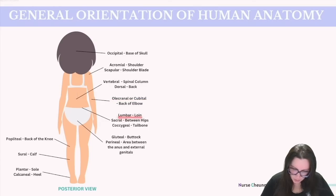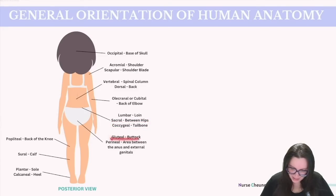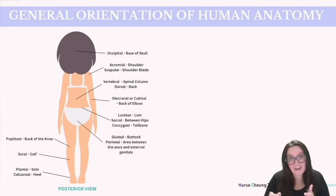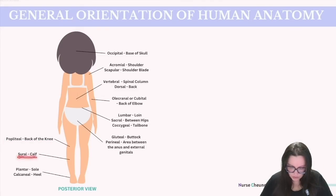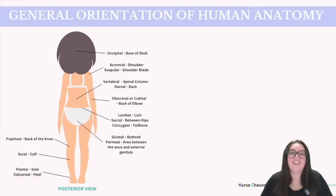We have lumbar for our loin; sacral between our hips; coccygeal, which is our tailbone; gluteal, which is our buttocks; perineal, which is that area between our anus and our external genitalia. We have popliteal, which is the backside of our knee; sural, which is our calf; plantar, which is the sole of our foot; and calcaneal, which is our heel.